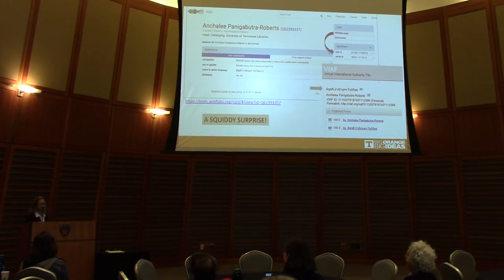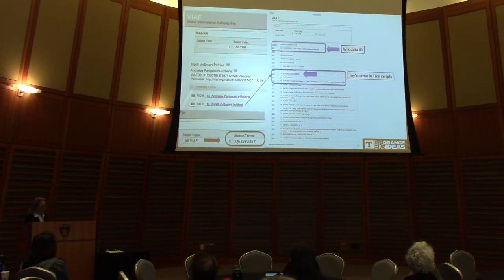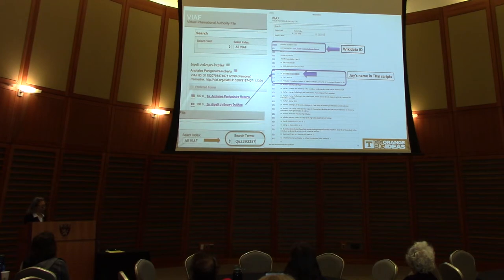I have to ask Wikidata to fix that. Let me talk about the algorithm. This is my VIAF Wikidata record — you can search my VIAF and then search by my Wikidata ID.